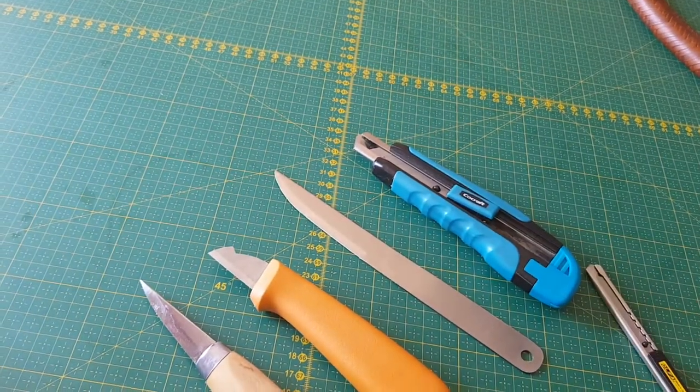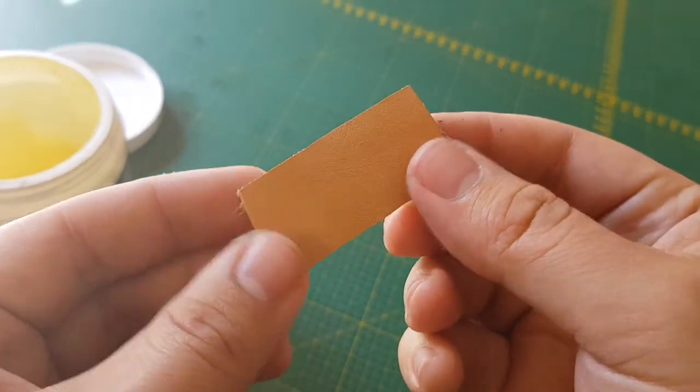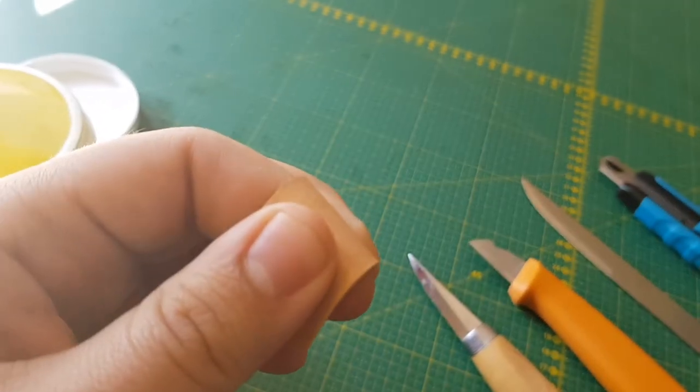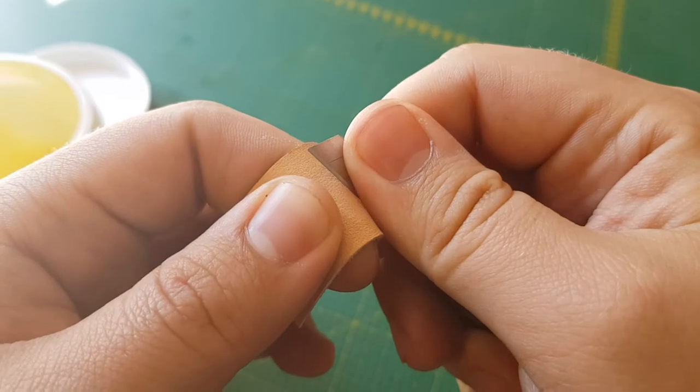Other than a sharp knife, what you're gonna need is a finger guard. Now this is just a scrap piece of leather that wraps around your finger. And you will use this to put your blade against.